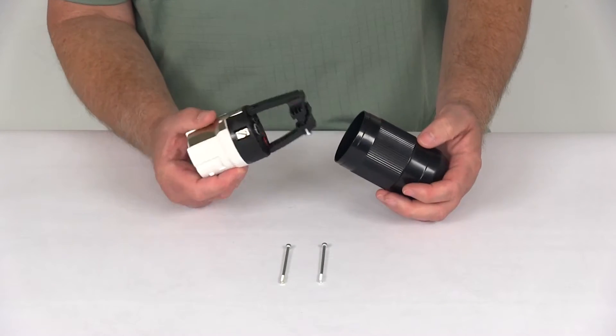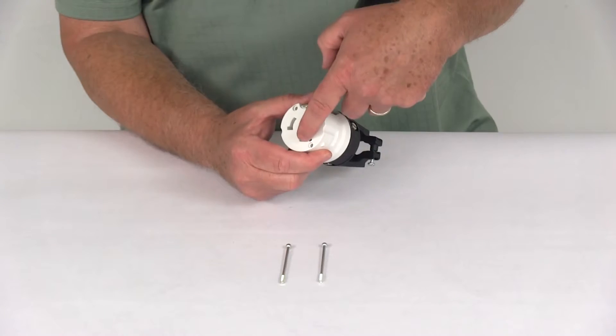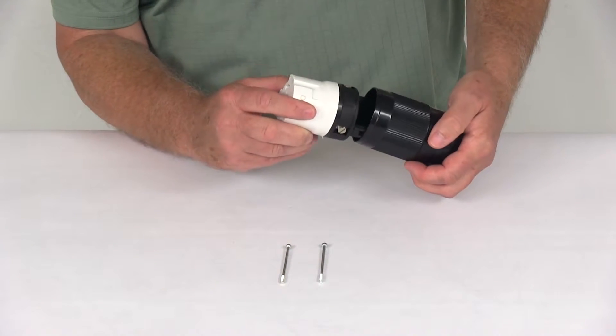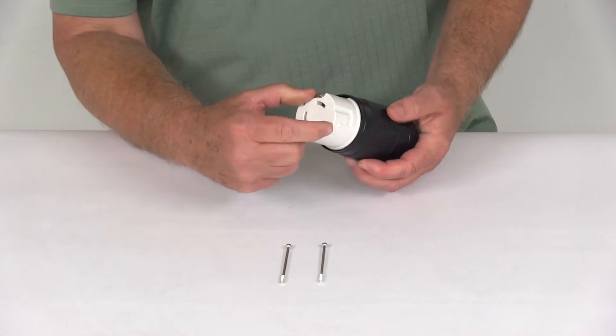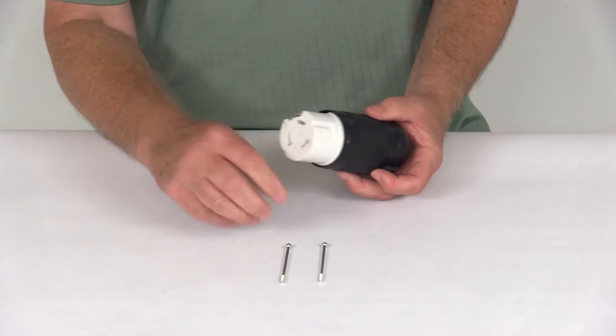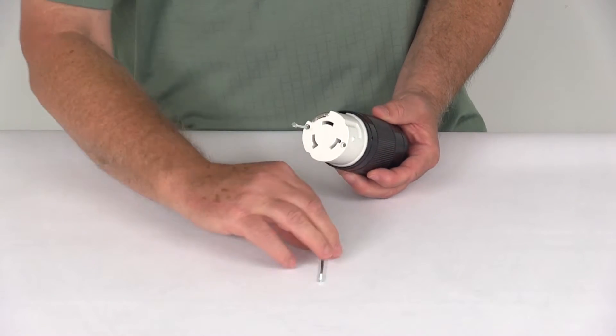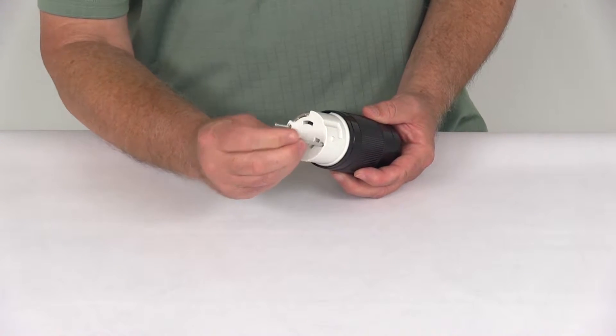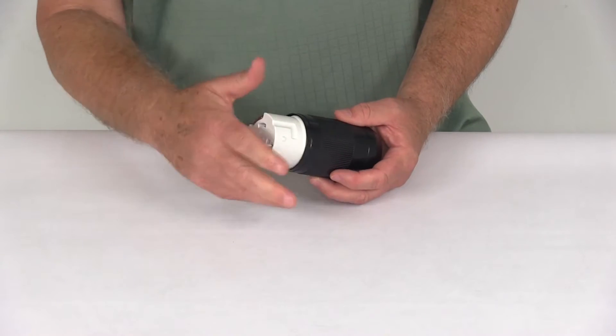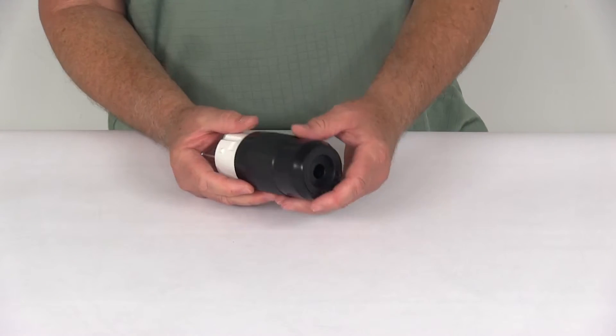Once you get it all secured, there's two holes here that those bolts will go through. You just line those two holes up with the two holes in this cover right here. Put your bolts in just like that and then tighten it down, and once you tighten it down it'll give you a nice secure waterproof connection.